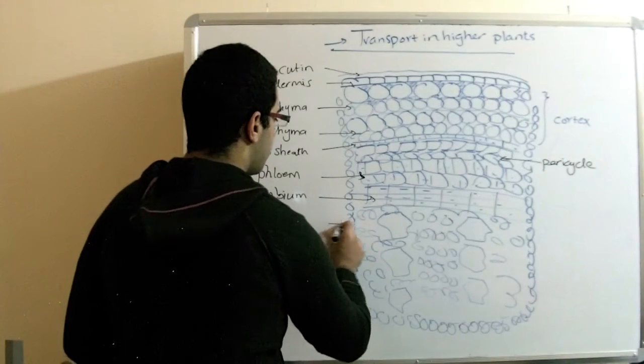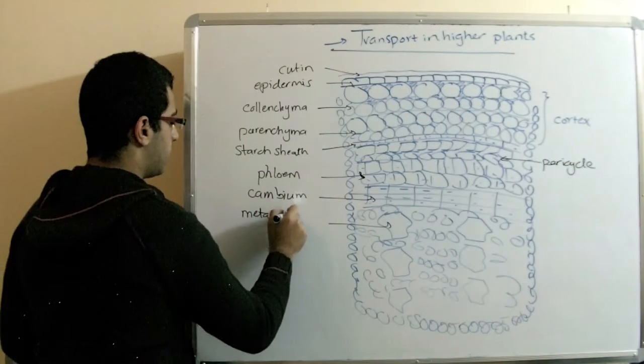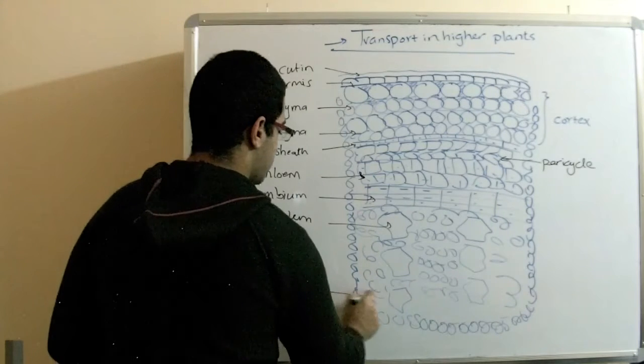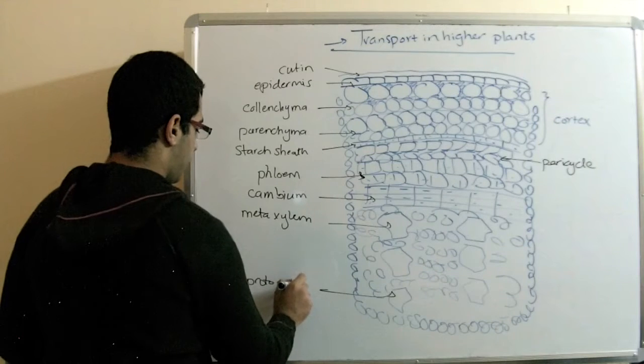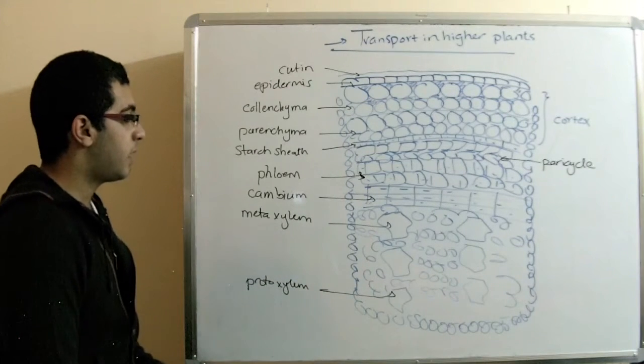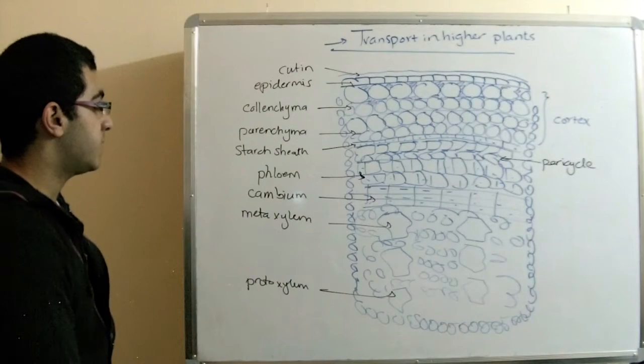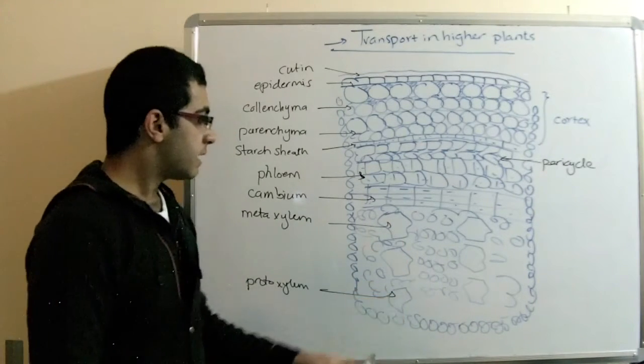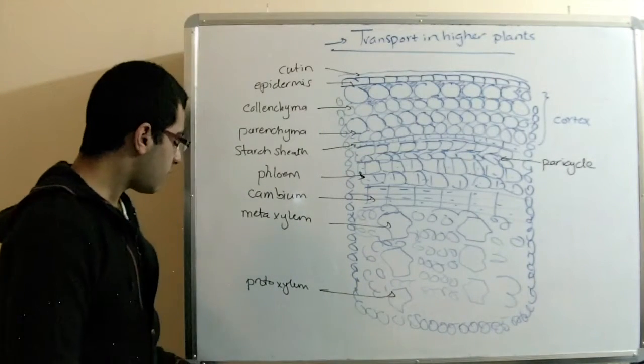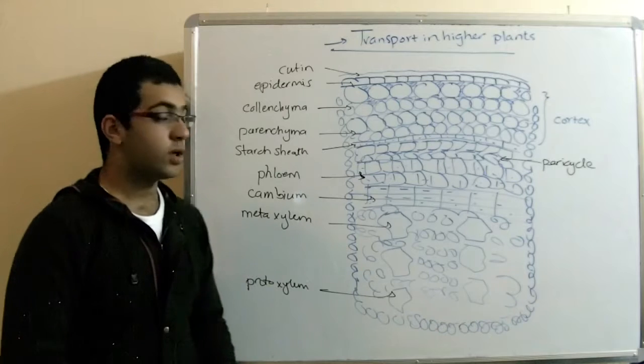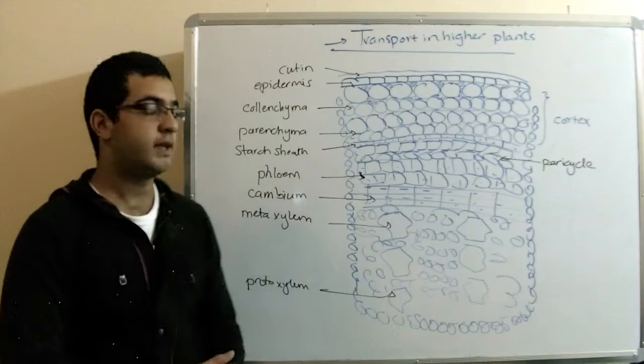Here we have metaxylem and protoxylem. There are kinds of xylem that varies according to the size of the xylem vessel tube. So, these xylem vessels are hollow tubes that are used for the transport of water and mineral salts from the root system to all the parts of the plants.